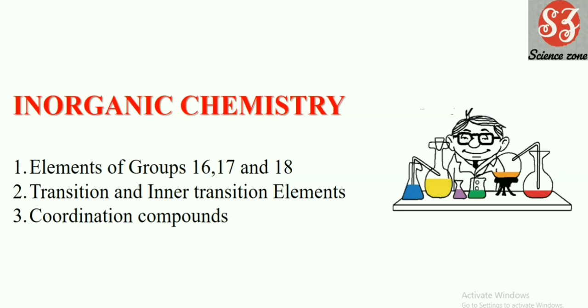The d block element consists of transition and inner transition elements and the group 16, 17, 18 elements are the p block elements. We are going to cover them in detail including their electronic configuration, anomalous behavior of oxygen and fluorine, allotropy of oxygen and sulfur, structure of oxy acids of sulfur and halogen, chemical preparation and properties of various compounds, and xenon compounds and their structures.